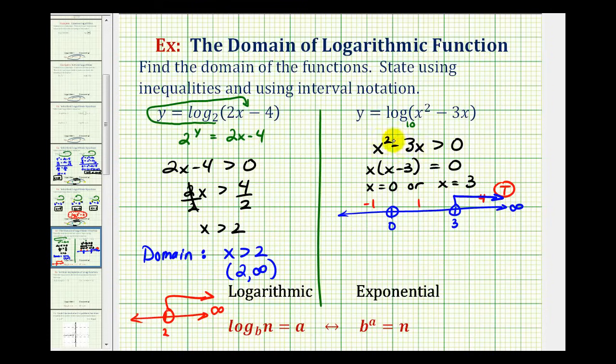When x is one, we'd have one minus three. That's negative two, which is not greater than zero. So this is false.